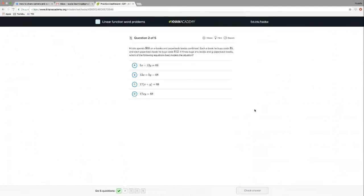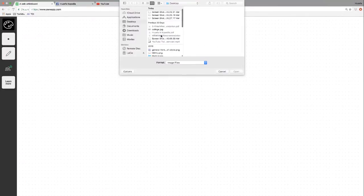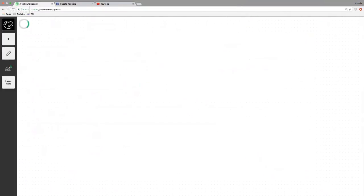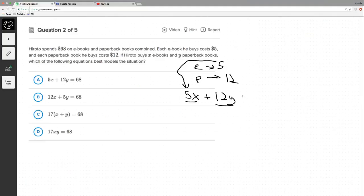Number two. Sorry, I just really can't talk today. I'm trying my best. All right, Hiroto spends $68 on e-books and paperback books combined. Each e-book he buys costs $5. Each paperbook costs $12. E $5, B $12. Hiroto buys X e-books and Y paperbacks. So X e-books, since this is $5 per e-book, we put it with the X. And $12, Y paperbacks plus 12Y, right? That's the total cost. That's the total cost. And it has to all add up to $68.